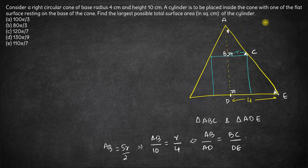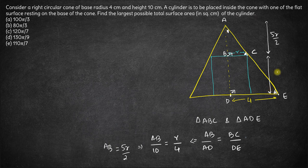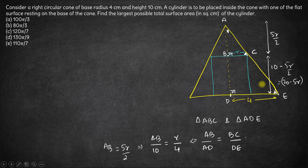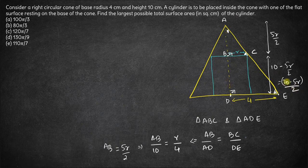From here we get that AB is equal to 10 into R by 2, which is 5R by 2. This is the length of AB. Now, if AB is 5R/2, what will be the length of BD? BD is going to be 10 minus 5R/2, which is (20 minus 5R) by 2. This is going to be the height of the cylinder BD.